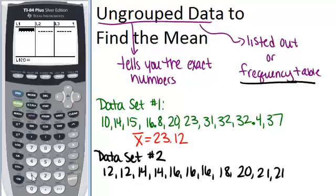So first I'm just going to enter in 12, and then 14, and then 16, 18, 20, and 21. And those were all the different numbers in my list.